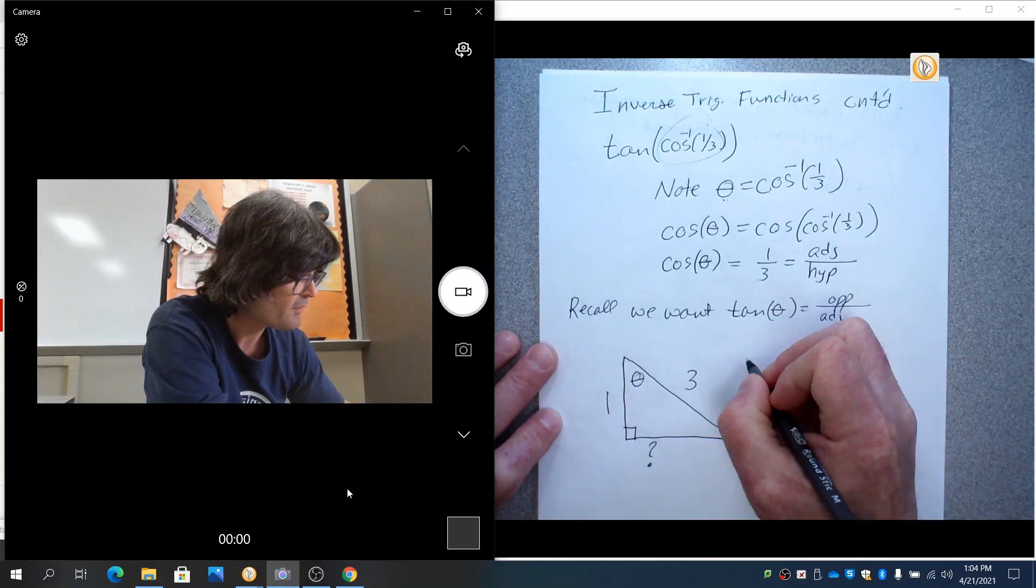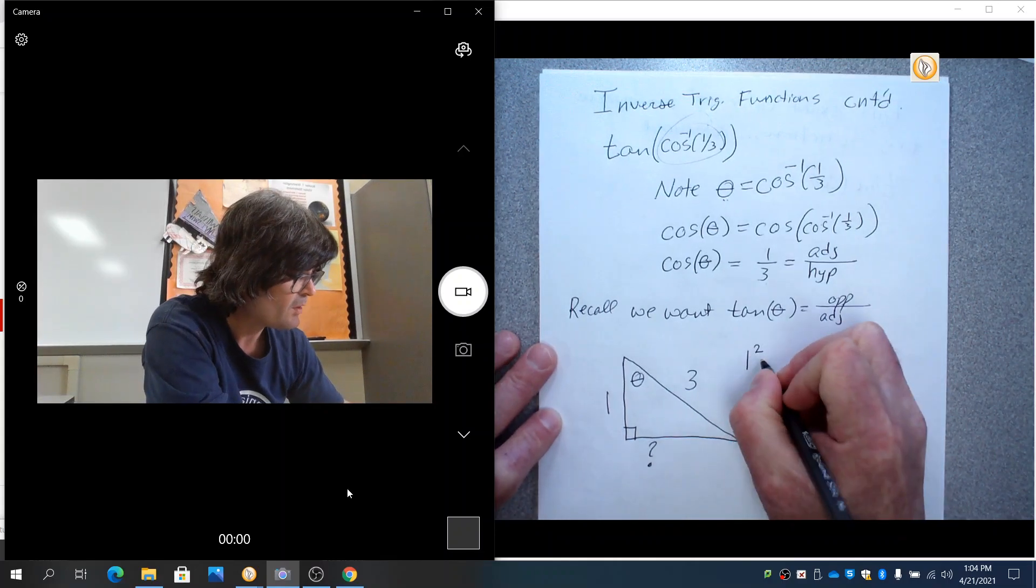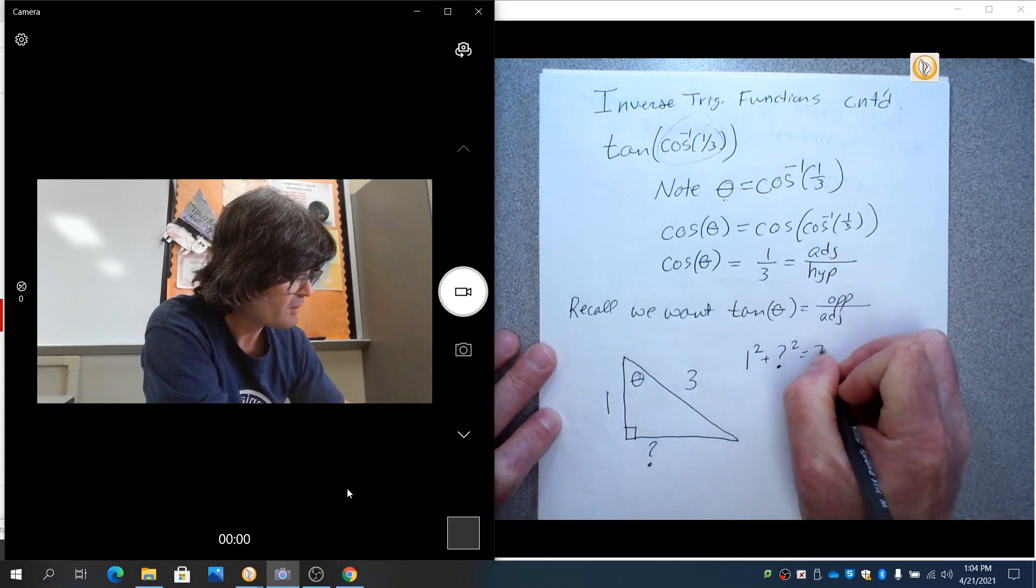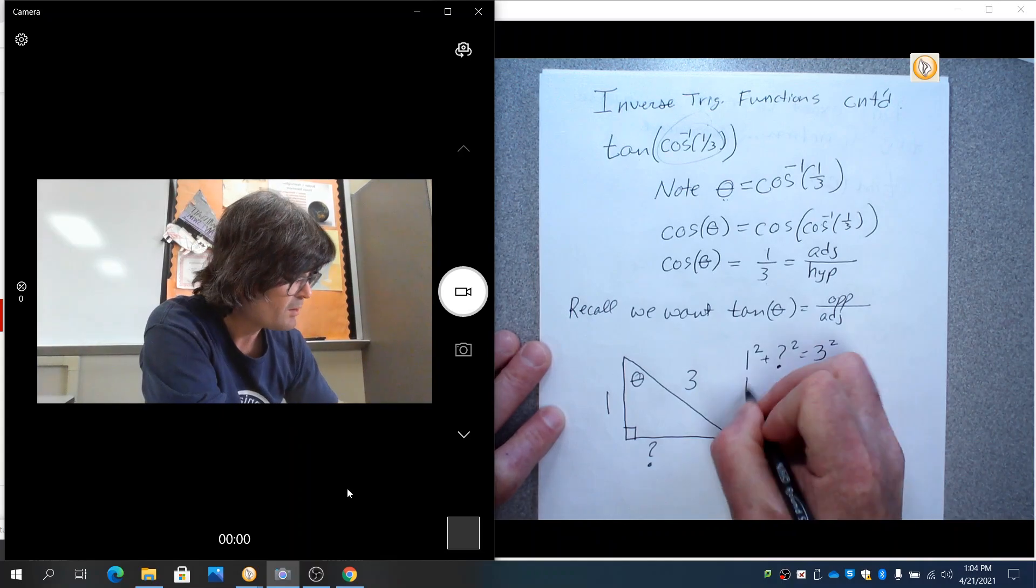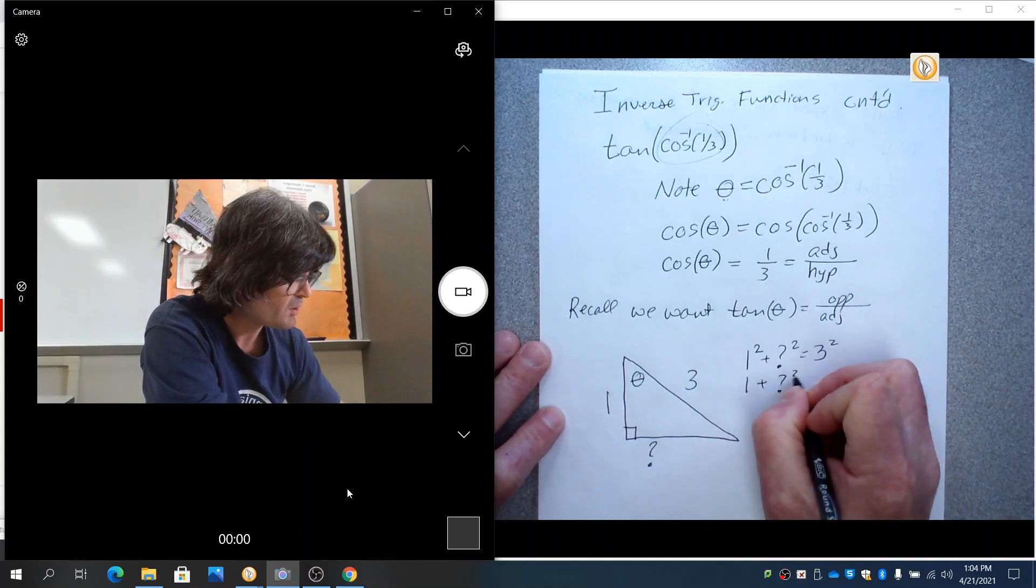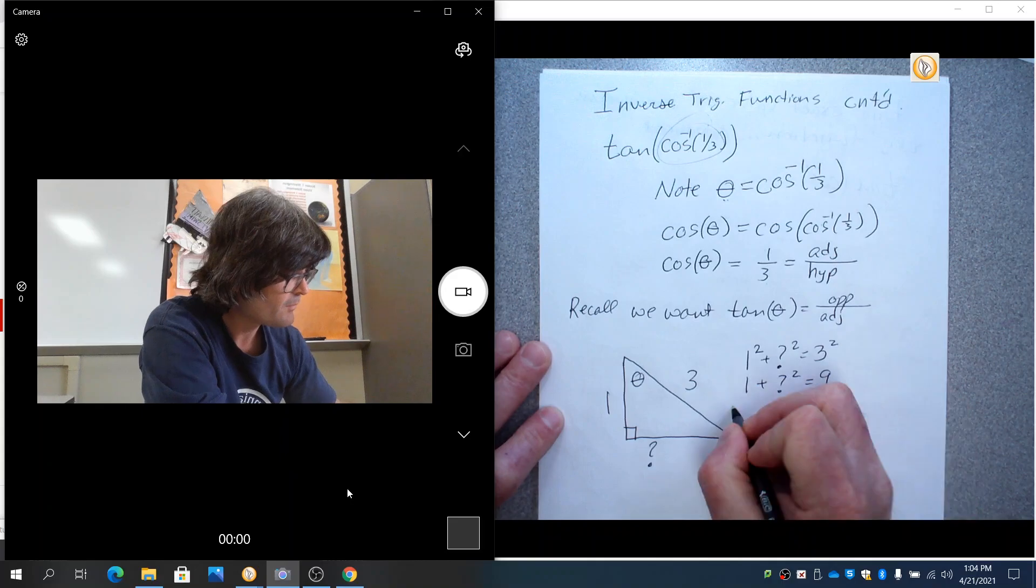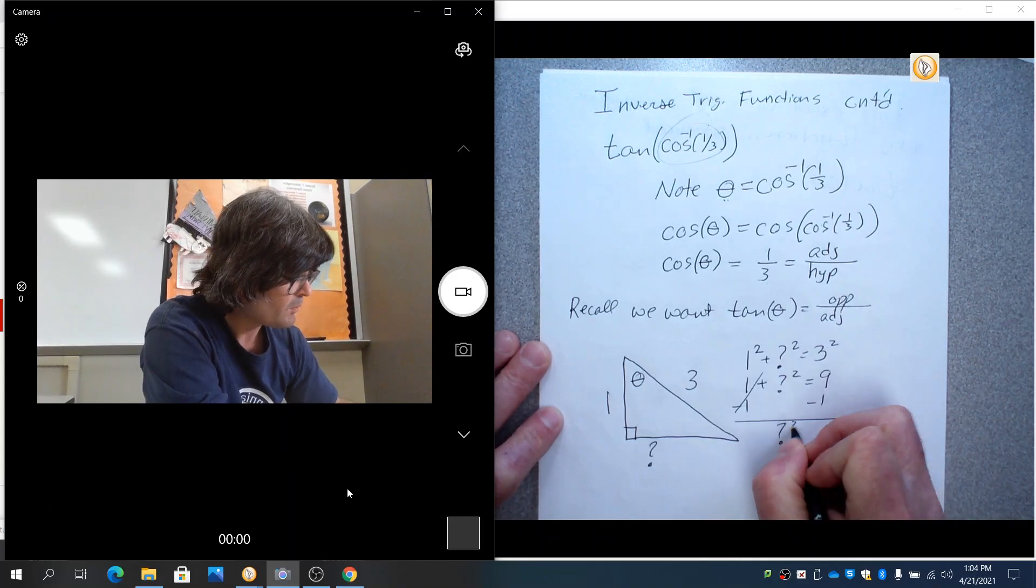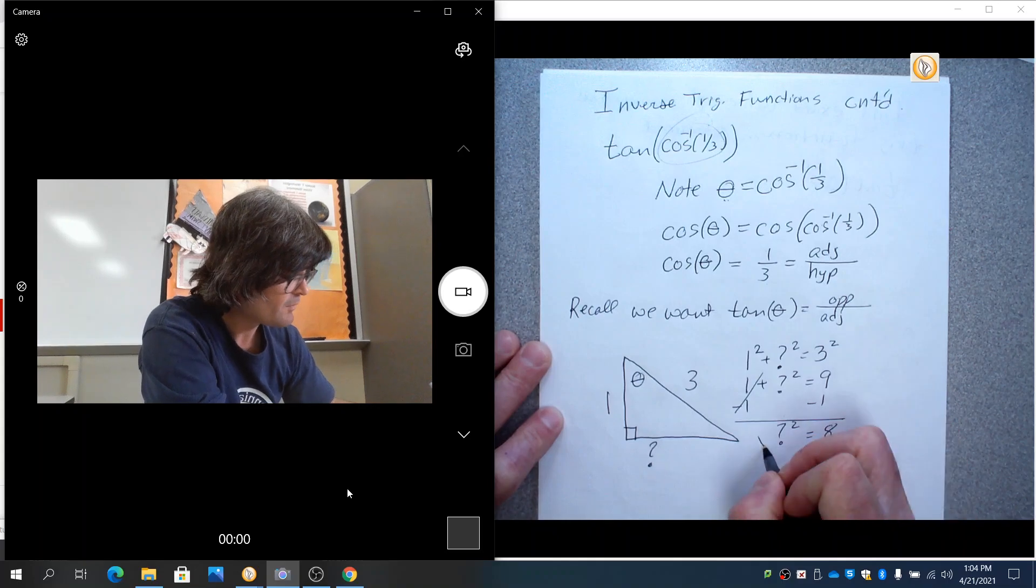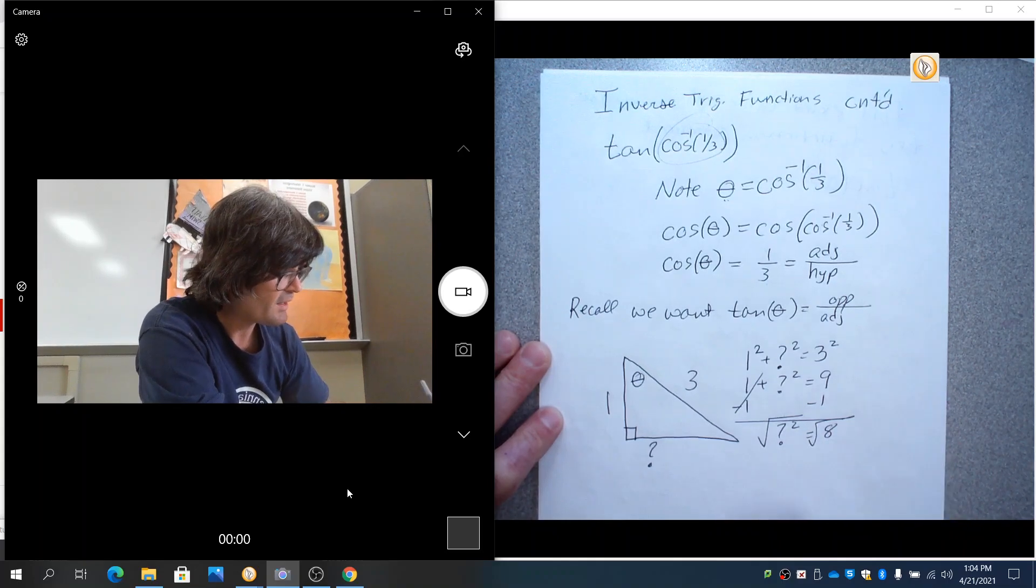And from the Pythagorean theorem, we know one squared plus question mark squared equals three squared. We're solving for question mark. One plus question mark squared equals nine. Take away your one. Question mark squared equals eight. And now we can take that. That's the square root of eight.